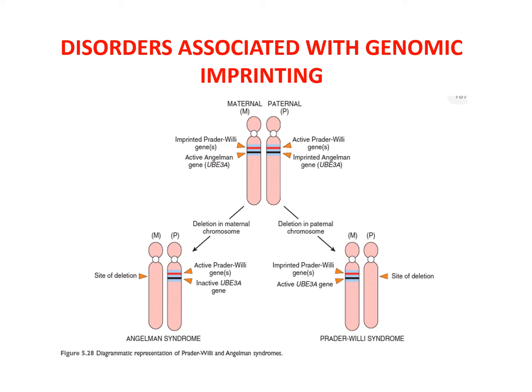Disorders associated with genomic imprinting: imprinting involves transcriptional silencing of the paternal or maternal copies of certain genes during gametogenesis, so only one functional copy exists in the individual. Loss of the functional allele by deletion gives rise to disease. In Prader-Willi syndrome, there is deletion of band q12 on the long arm of paternal chromosome 15. Genes in this region of maternal chromosome 15 are imprinted, so there is complete loss of their function. Patients with Prader-Willi syndrome have intellectual disability, short stature, hypotonia, hyperphagia, small hands and feet, and hypogonadism.